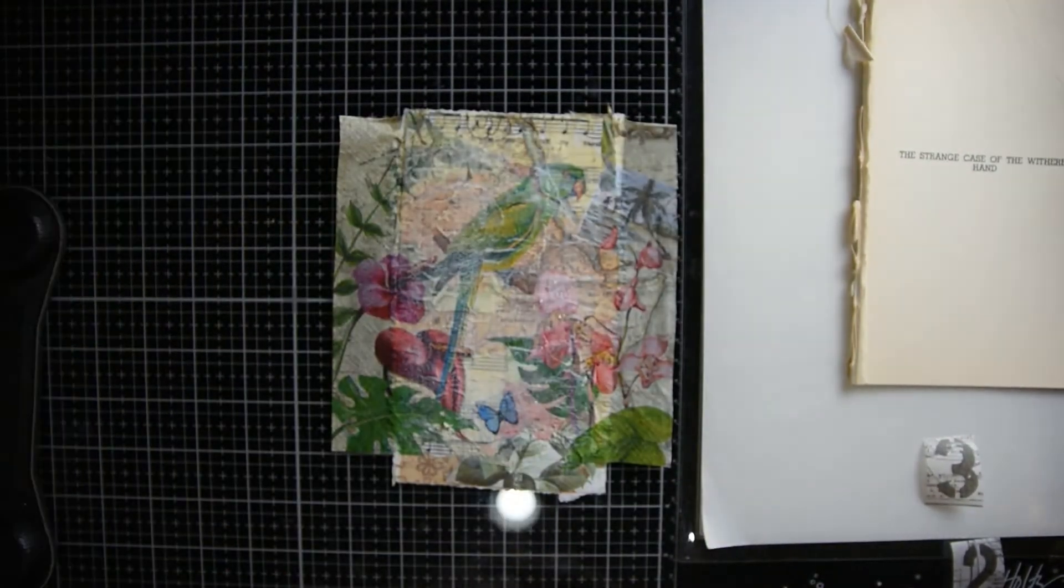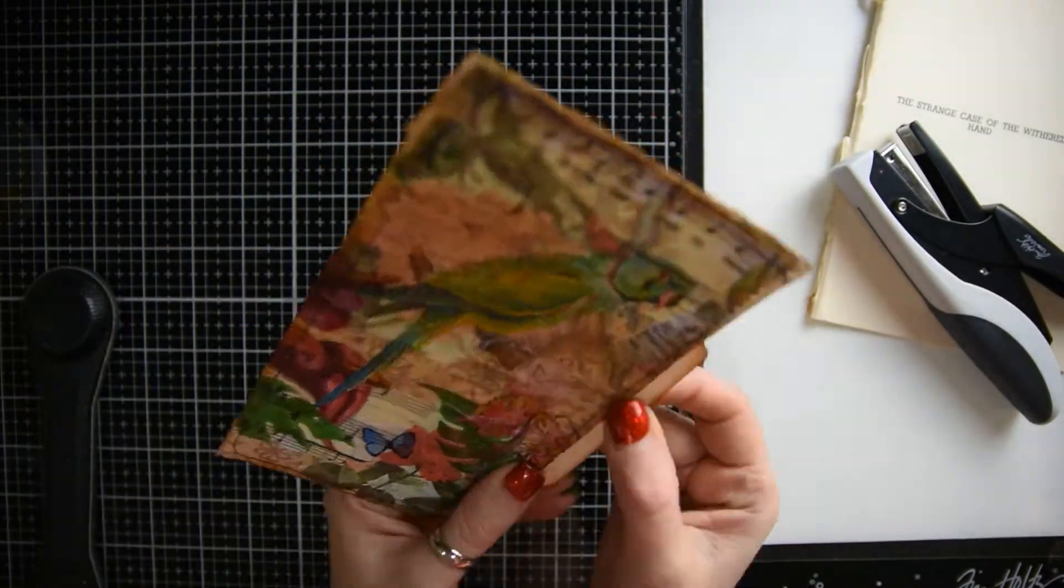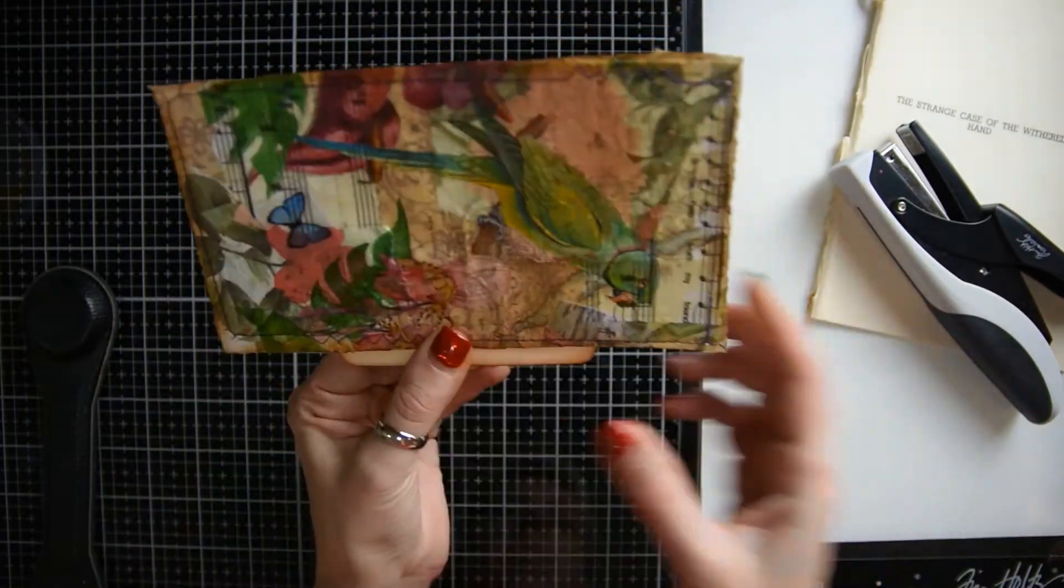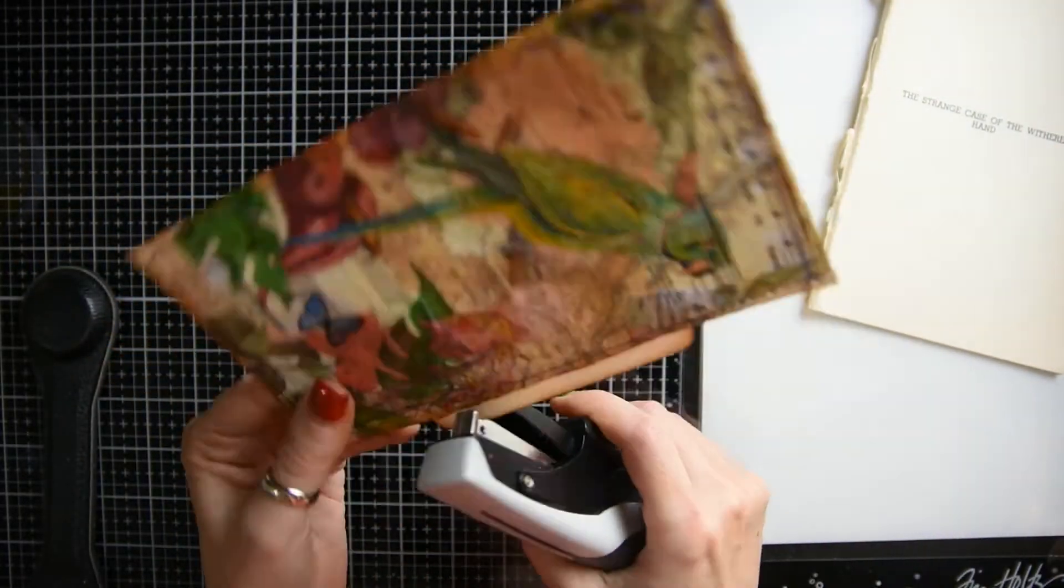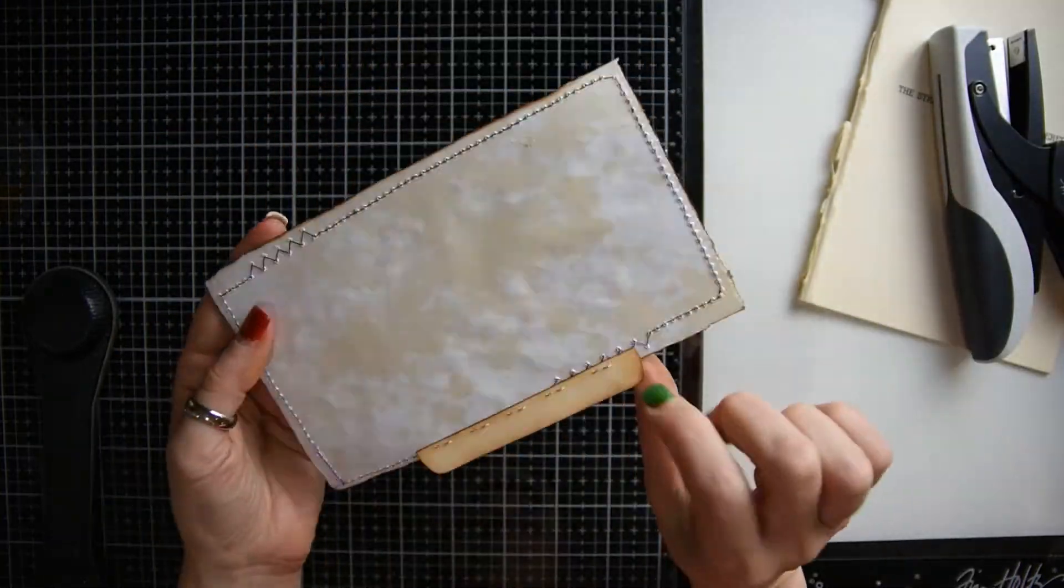I got my heat gun out just to help speed it along. And then I sewed around it and inked around it. And then I put a little piece of file folder as the tab. So cute.